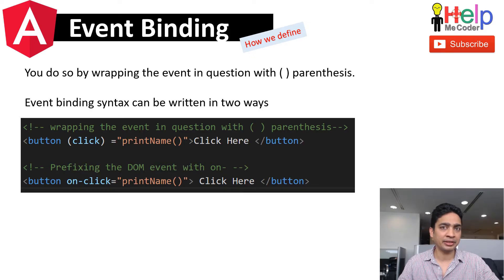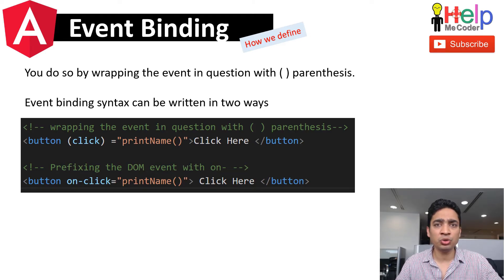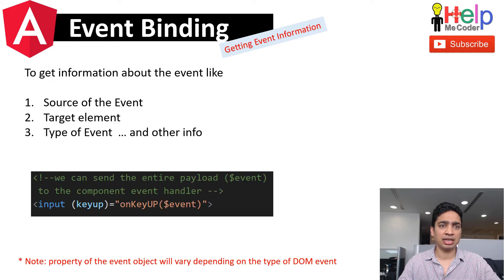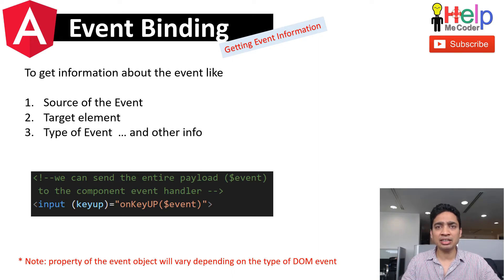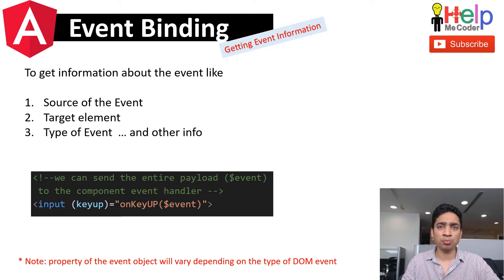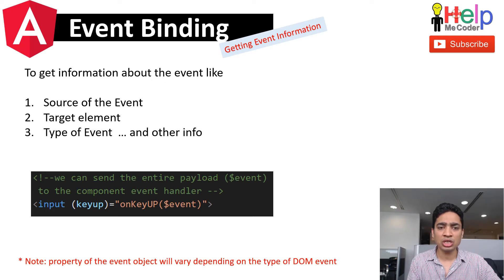In the method we defined on this button, we are turning the value to true or false, and based on that, this particular div is getting hidden or displayed. Notice that we didn't pass any information to that method — the method was just called and did some processing. But the method didn't know which HTML element raised it. In most cases, you will need to tell the method information like the source of the event, the target element, or the type of the event.